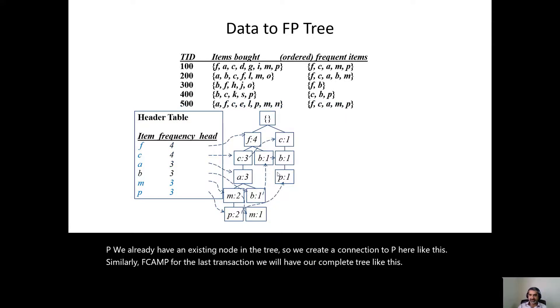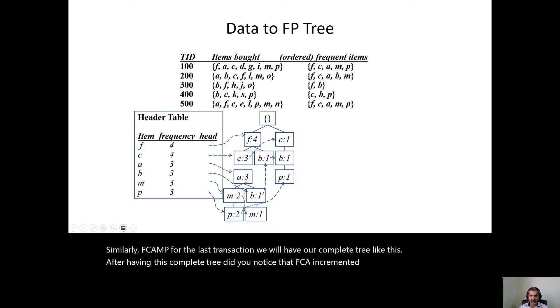After having this complete tree, did you notice that F, C, A incremented F, C, A counts, and then M and P became 2 and 2.